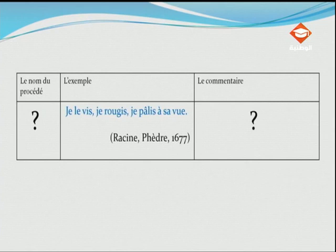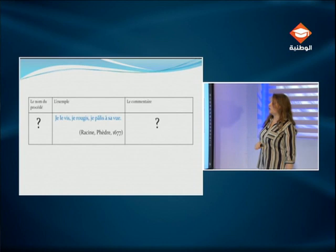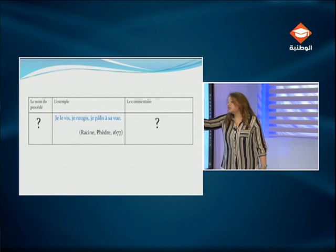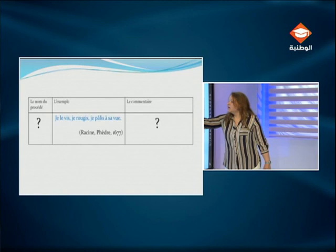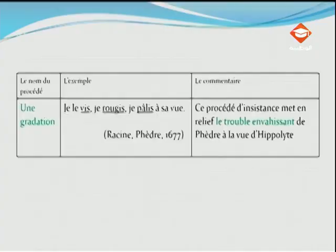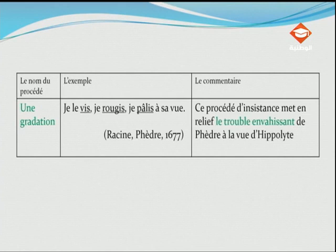Sixième exemple, un exemple de Racine : « Je le vis, je rougis, je pâlis à sa vue. » Quel est ce procédé ? Regardez les verbes : voir, rougir, pâlir — il y a une certaine progression, une certaine gradation dans ces verbes. Phèdre voit Hippolyte, puis elle rougit, puis elle pâlit. On commence par le regard, puis le rougissement qui symbolise la naissance de l'amour, puis la pâleur — le personnage est troublé à cause du coup de foudre. C'est une gradation, et ce procédé d'insistance met en relief le trouble envahissant de Phèdre à la vue d'Hippolyte.